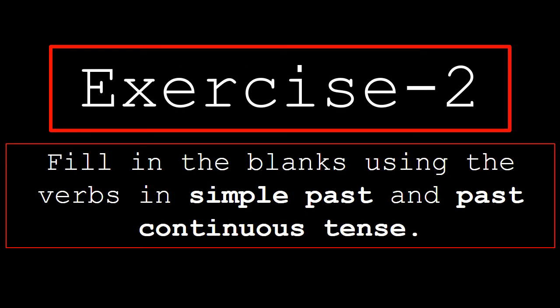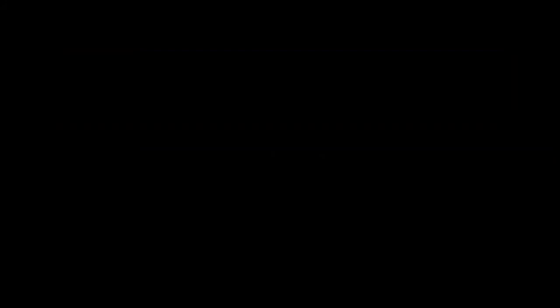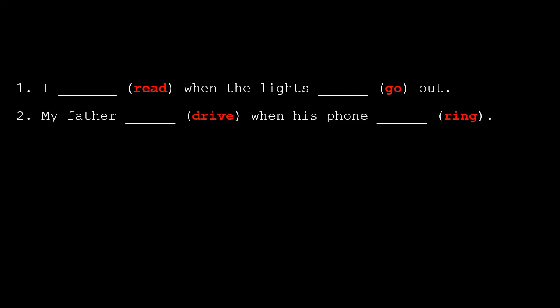Exercise 2: Fill in the blanks by using the verbs in simple past and past continuous tense to complete the sentences. The verbs to be used are given in the brackets. Number 1: I [read] when the lights [go out]. Number 2: My father [drive] when his phone [ring] — drive and ring are the verbs given in the blanks.